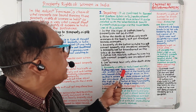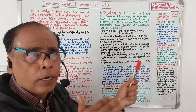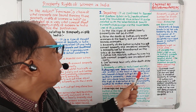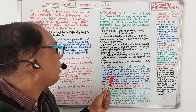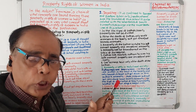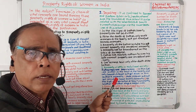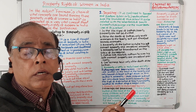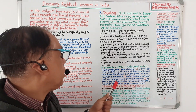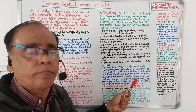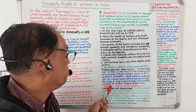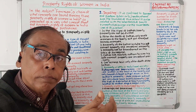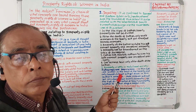Now, property rights in matrilineal society — a society where the mother is the head. In this system, the mother is the head of the family and only female children will get a share in the mother's property. At the time of distribution of family property, the mother's brother will play a major role.